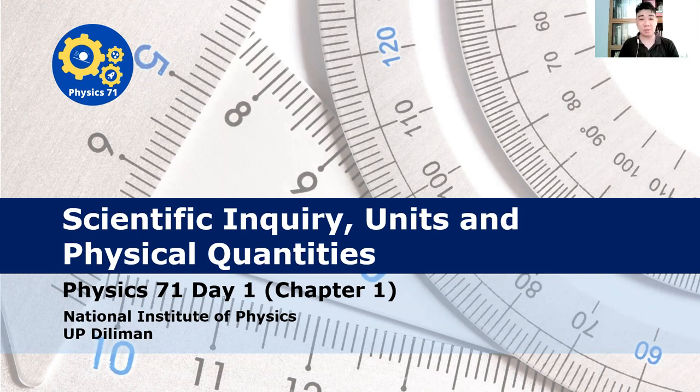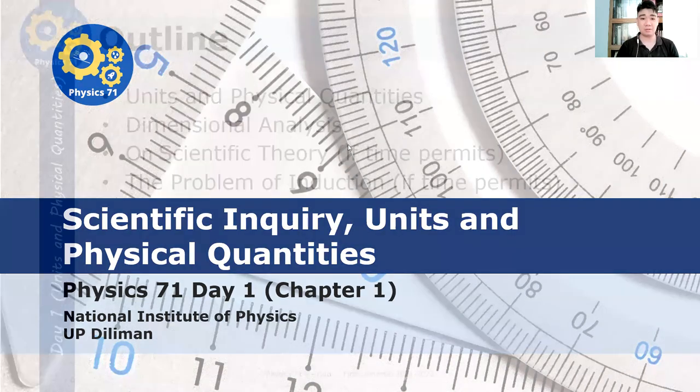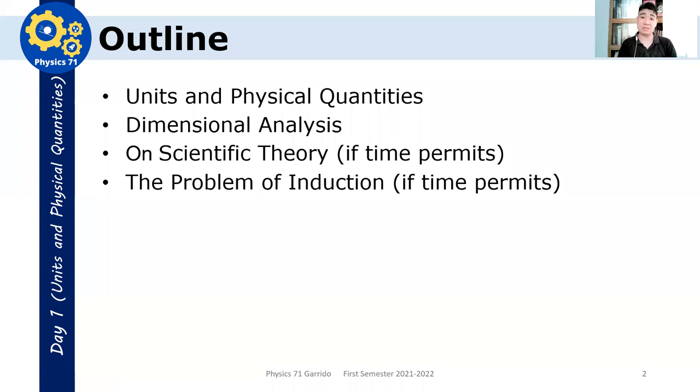What's important right now is to cover the most important topics, which is on units and physical quantities. So here's an outline of our discussion. We'll first discuss units and physical quantities, followed by dimensional analysis. I think this is really important. That's why it's a separate discussion. We will solve problems involving dimensional analysis. And if time permits, we will discuss scientific theory. What makes a theory scientific? We will discuss Karl Popper, for example, if time permits.